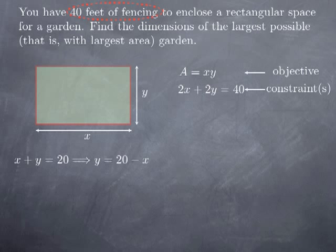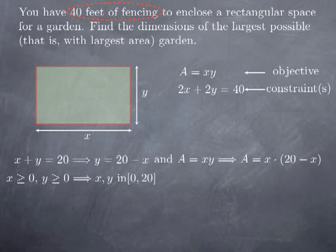In this case, y is 20 minus x. If I substitute 20 minus x for y in the expression for my objective A, I get that the area is x multiplied by (20 minus x), obtaining A as a function of one variable. Since x and y are dimensions of a rectangle, they are non-negative and cannot be more than 20, because their sum is 20. So x is between 0 and 20.